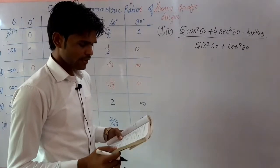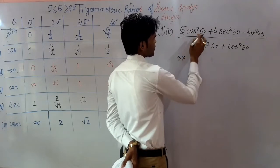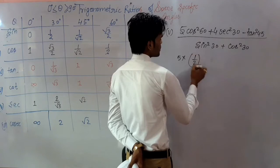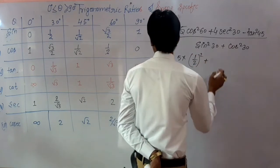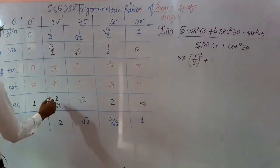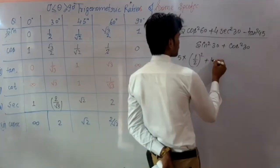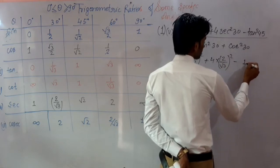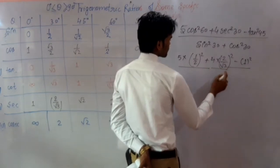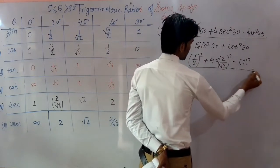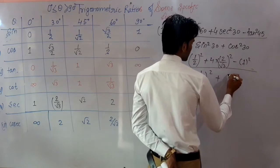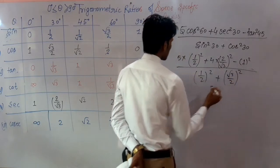Putting the values: 5 into cos²60 — cos60 is 1/2, so it will be whole square. Plus sec²30 — from the table, sec30 is 2/√3. So putting this value: 4 into (2/√3) whole square, minus tan²45 means 1 whole square. Upon sin²30 that is (1/2) whole square, plus cos²30 that is (√3/2) whole square.